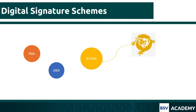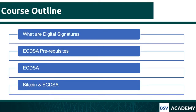ECDSA is used in Bitcoin. The course is organized into four chapters, and each chapter subsequently builds upon the foundation established in the previous chapter. At the end of every chapter, you'll be required to pass an assessment in order to proceed further.